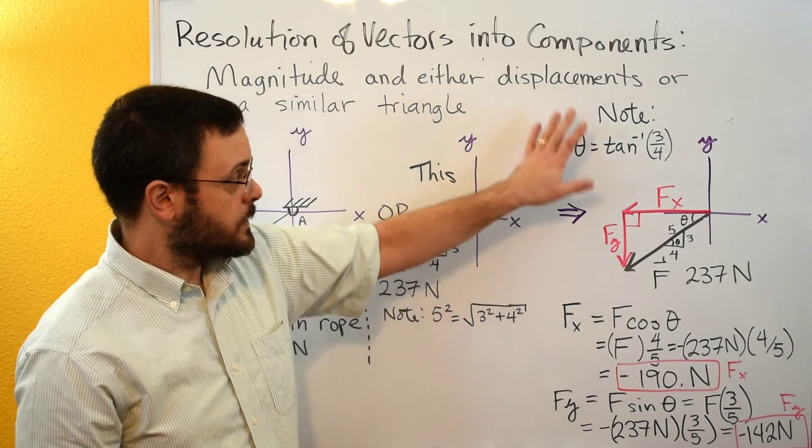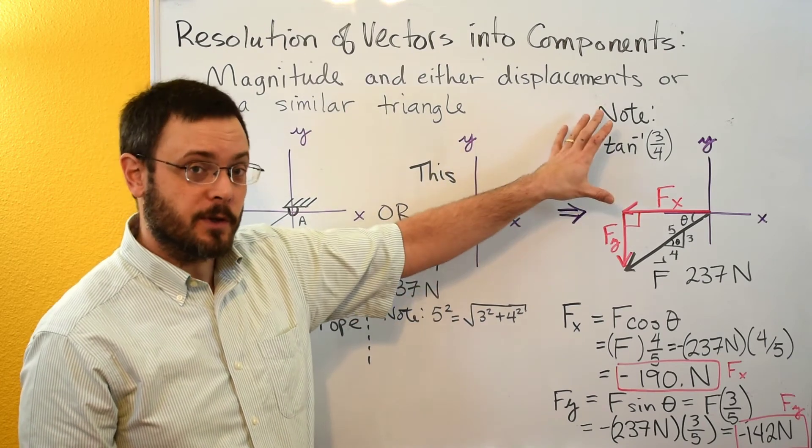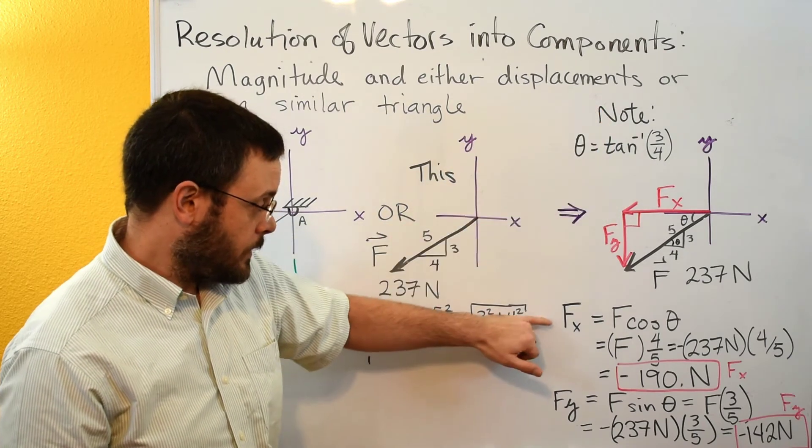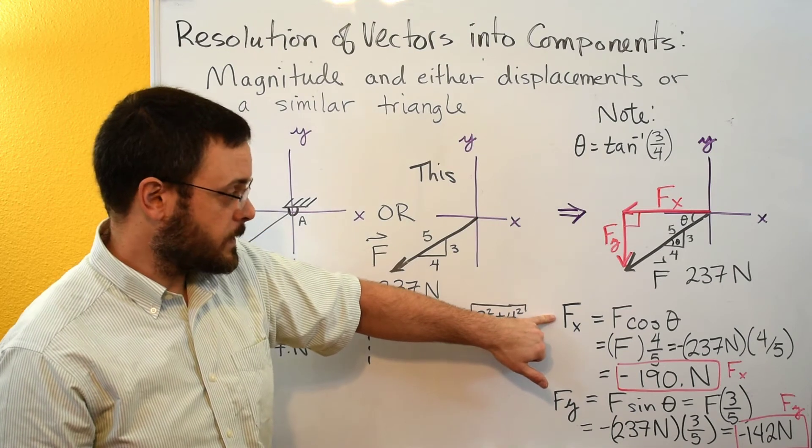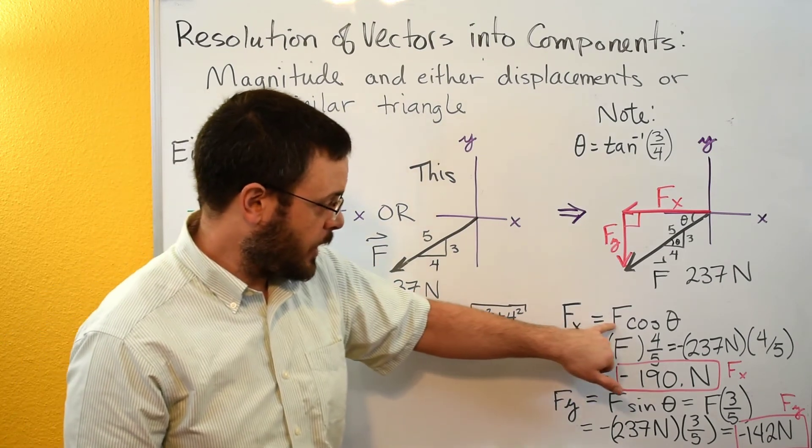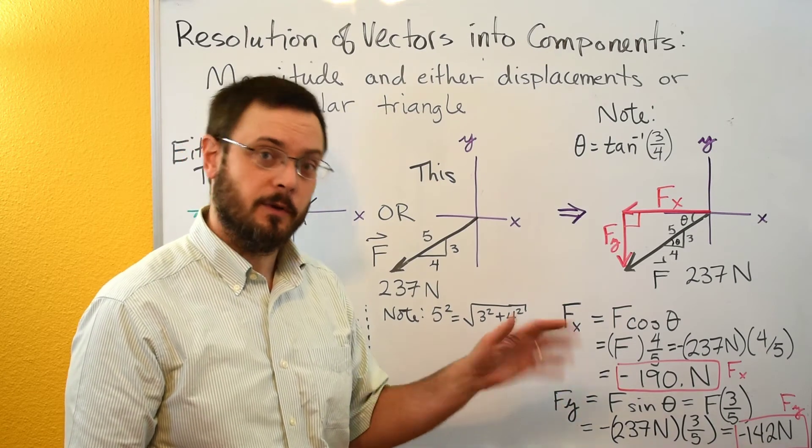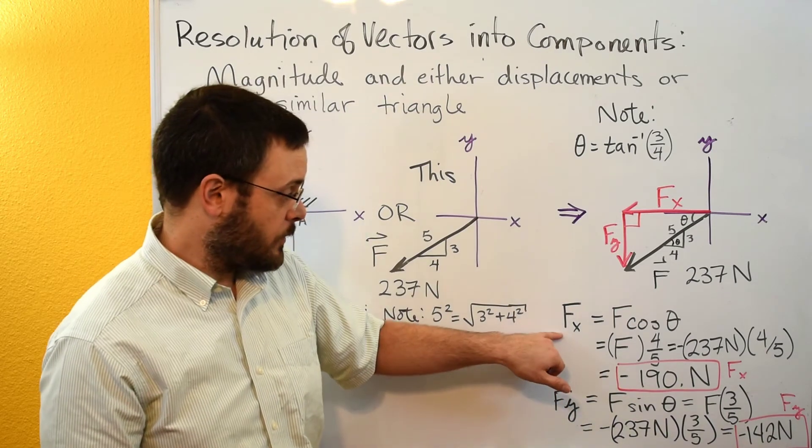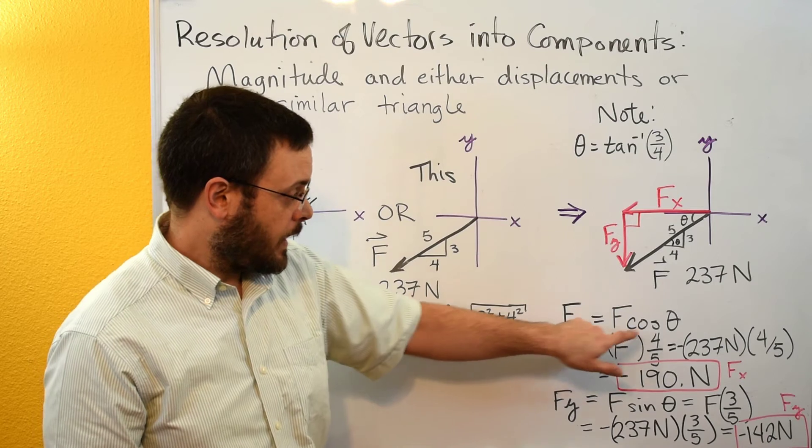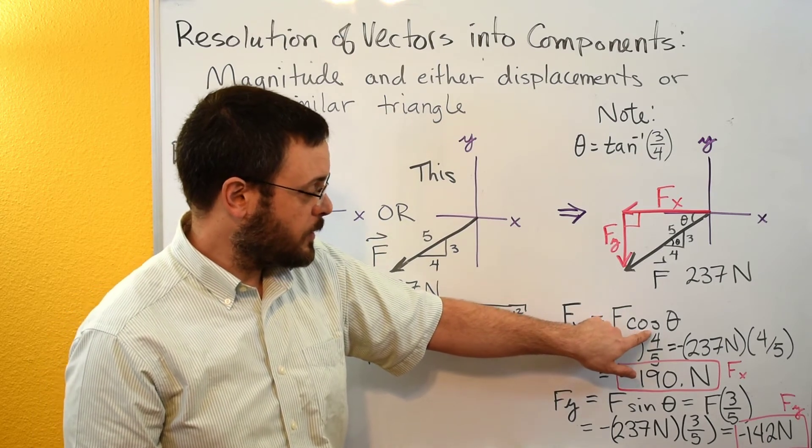So let's look at how we would solve the problem without solving for theta. We can do that by saying that the x component is going to be equal to f cosine of theta. That's the same equation that we saw in the first of the three videos, just rearranged for fx.